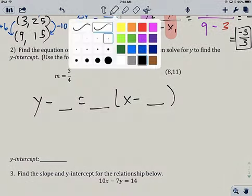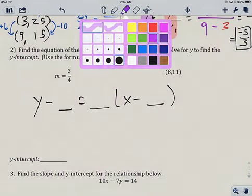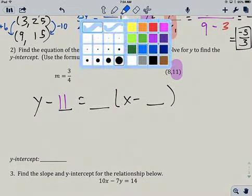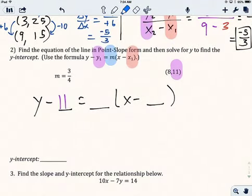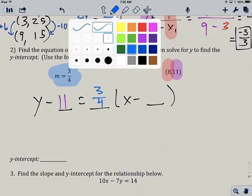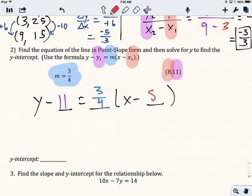I'm going to start with my y1. The y1 is just the y value from the point. You can remember that the y's go with the y's. I'm going to put my y value of 11 right next to it. Next blank, the thing that's outside of the parentheses is the slope. So I'll put 3 fourths right here. And then the x value from the point goes with the x in the parentheses. So it's x minus 8.